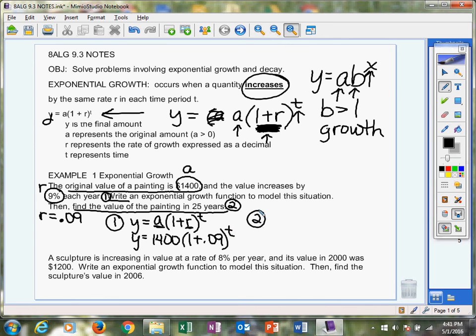The second thing they want us to do, and this is where your calculator is going to come into play - you are going to take your equation, and instead of putting t, now we're going to put the time amount that they gave us in the problem. This is going to be your t right there, the 25 years. This painting's value is increasing every year by 9%.